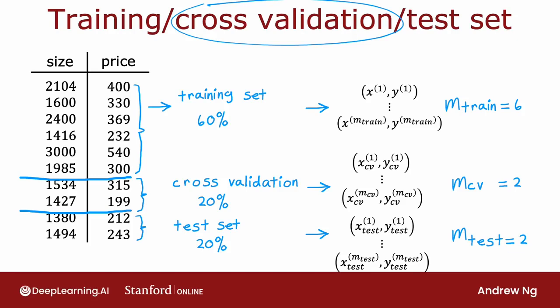I don't think it's a great name, but that is what people in machine learning have come to call this extra data set. You may also hear people call this the validation set for short—fewer syllables than cross-validation. Or in some applications, people call this the development set, which means basically the same thing, or the dev set for short. All of these terms mean the same thing as cross-validation set. I personally use the term dev set most often because it's the shortest, fastest way to say it, but cross-validation is probably used a bit more often by machine learning practitioners.